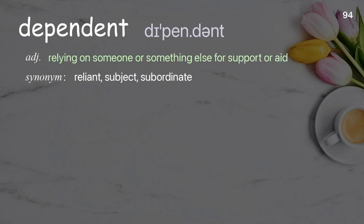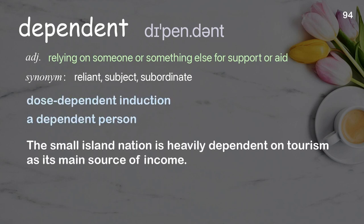Dependent: relying on someone or something else for support or aid. Examples: dose-dependent induction, a dependent person. When on tourism as its main source of income.